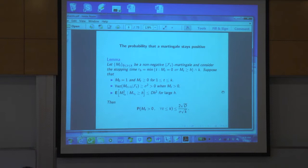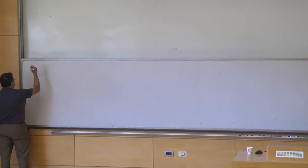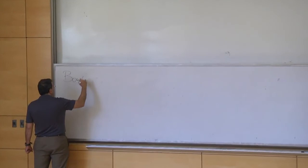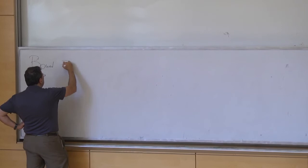Let me say where we're headed. Here is a bound proved using evolving sets — a bound on mixing time for lazy chains.